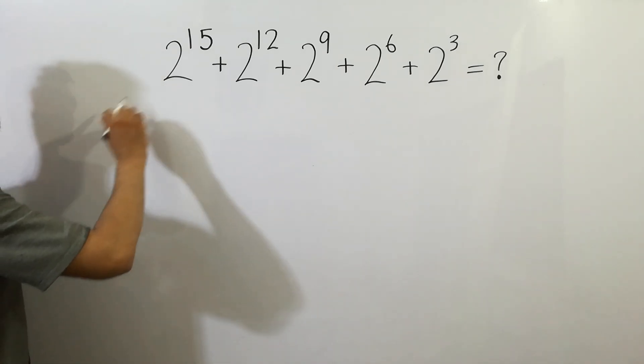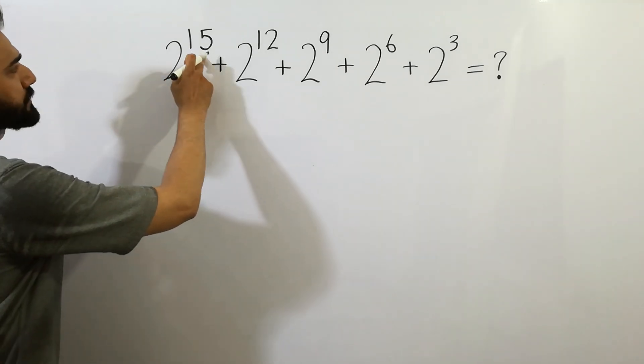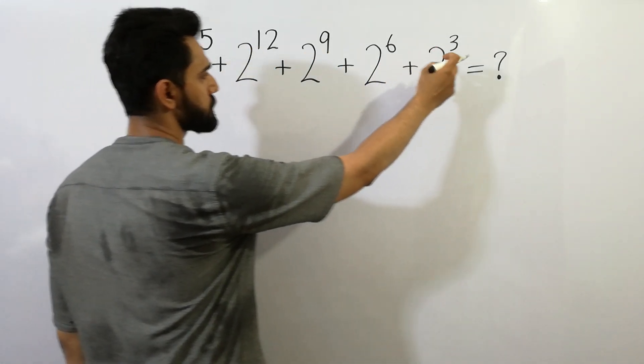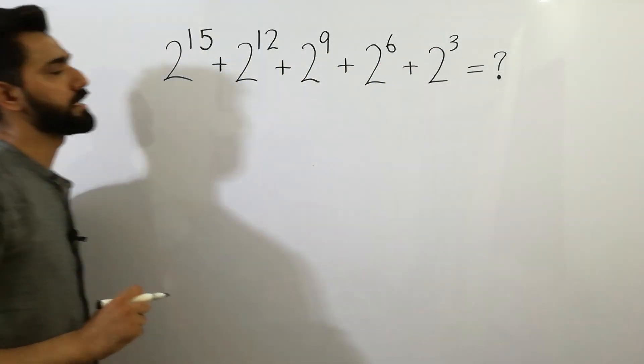Hey guys, 2 to the power 15, 12, 9, 6, 3 is equal to... let's solve it.